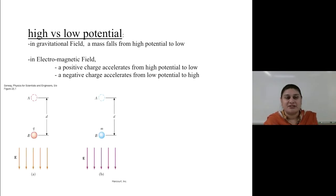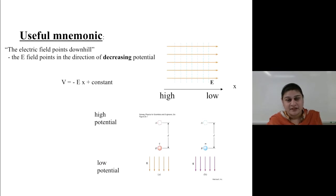High versus low potential. In a gravitational field, the mass falls from high potential to low potential. In an electromagnetic field, or electric field for now, a positive charge accelerates from high potential to low potential. However, a negative charge will accelerate from low potential to high potential. So now we have to be very careful because the signs of these charges matter a lot. A useful mnemonic to remember is electrical field points downhill. So electrical field points in the direction of the decreasing potential.